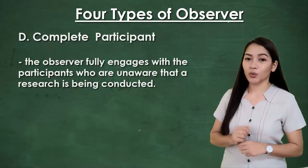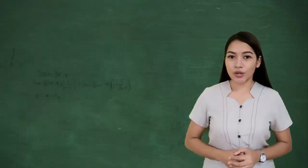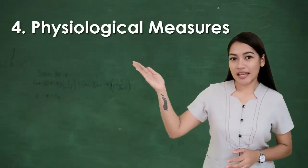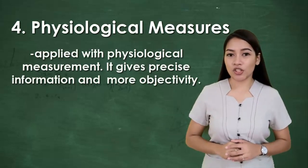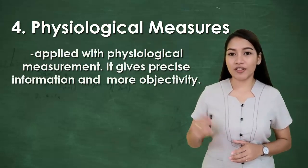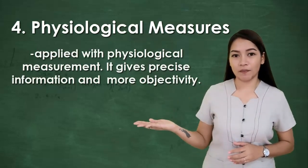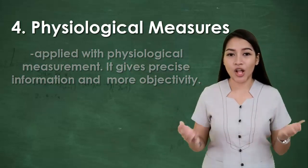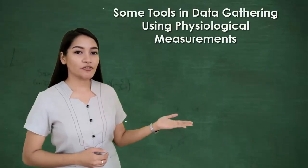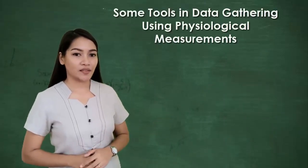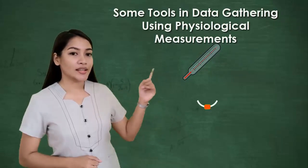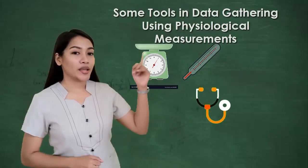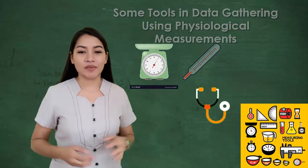Another technique is using physiological measures. This technique is applied with physiological measurement involving physical data from the subject. It conveys precise information and is more objective than other data collection methods. Here are some examples of tools used in this technique: thermometer, stethoscopes, weighing scale, and other measurement devices.